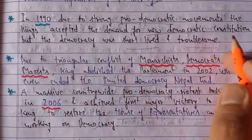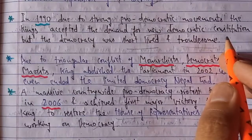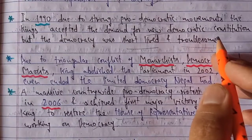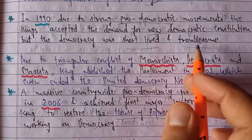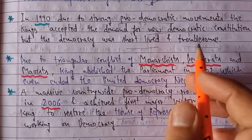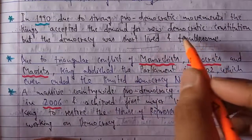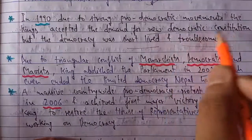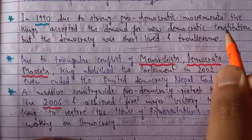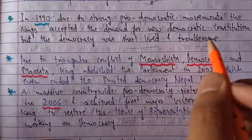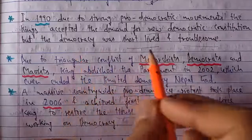A democratic constitution was formed — parliament was established, and people had the right to elect their government. However, the democracy was short-lived and troublesome. This was a constitutional monarchy: the king had allowed a democratic constitution and a government, but the major power was still controlled by the king. That is why this democracy was short-lived.